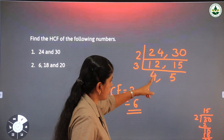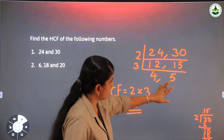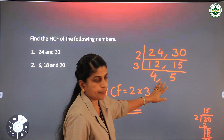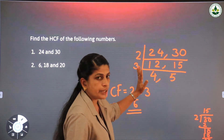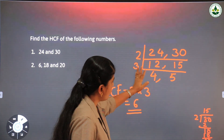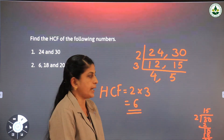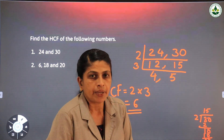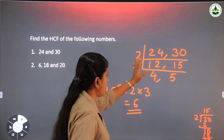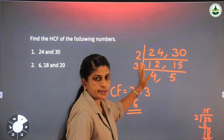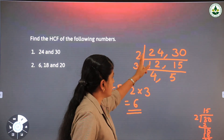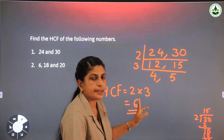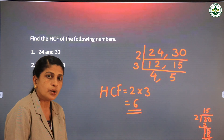For HCF, unlike LCM, do not continue until you reach 1, 1, 1. For HCF, only divide when a prime number can divide all the given numbers. If any number cannot be divided, stop and find the product of all the divisors used. Here we divided only by 2 and 3, so the product is 6, which is the highest common factor.